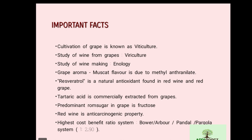The predominant sugar present in grape is fructose. Red wine has anti-carcinogenic properties — it inhibits cancer. The highest cost-benefit ratio of a training system is the bower, arbor, pandal, or pergola training system, with a cost-benefit ratio of 1:2.9.